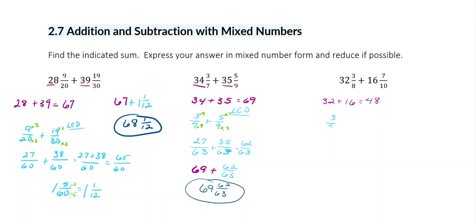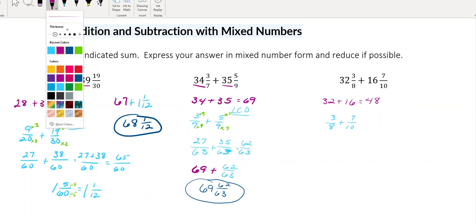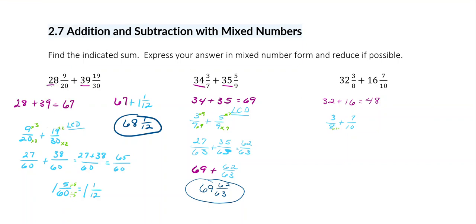So I'm going to add 3 eighths and 7 tenths. If I don't want to hunt for a least common denominator, I can just multiply my two denominators together and then reduce at the end. I think that's what I'm going to do this time — multiply 8 times 10. So I'm going to multiply my 3 times 10, and I get 30 over 80.